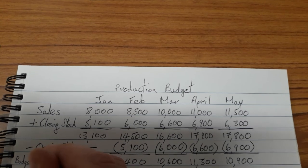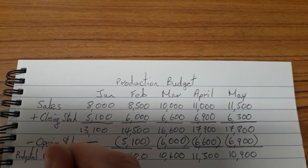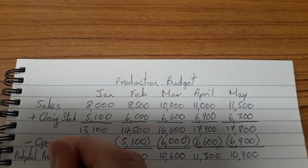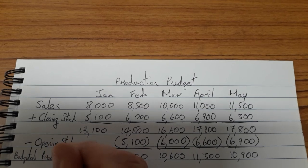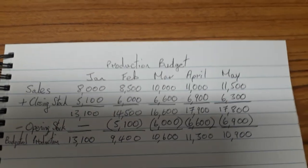Those figures we call 'required for production' or 'budgeted production' — that's what we're budgeting we're going to produce or manufacture in our warehouse.